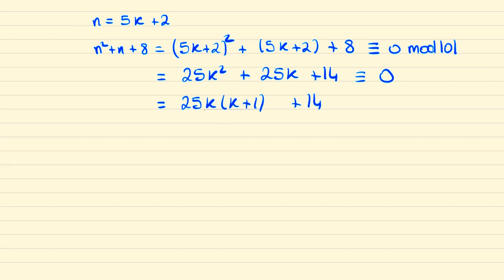And we can factorise the first two terms as 25k times k plus 1. And then this shows us that k times k plus 1 will always be even and 25 times an even will always end in a 0. Meaning that when we add 14 again we know that this entire expression must be 4 mod 10.